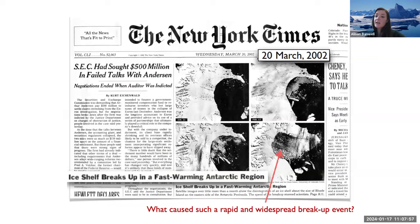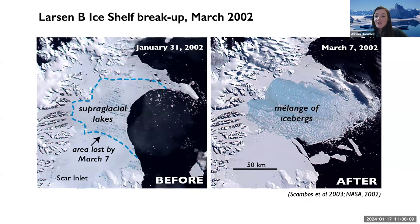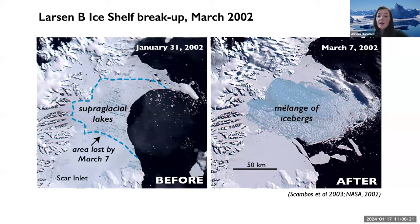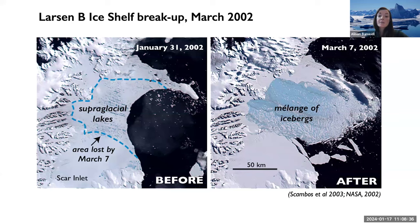The biggest event that got us interested in surface lakes and ice shelf stability was the breakup of the Larsen B ice shelf, which made the front page of the New York Times in 2002. Two satellite images spaced five weeks apart show thousands of surface lakes on the left, then on the right that entire area has broken up into a melange of icebergs — an area about the size of Rhode Island. This event led to the speedup of upstream grounded glaciers feeding the ice shelf, contributing to sea level rise.